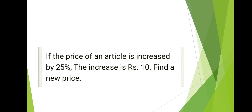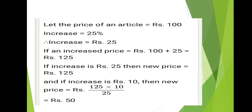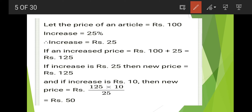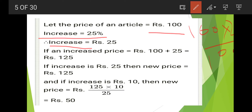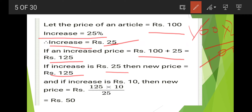The next question: if the price of an article is increased by 25% and the increase is rupees 10, find the new price. Let the price of an article be 100. Increase is 25% means increase will be 25. So increased price is 100 plus 25 equals rupees 125. If increase is rupees 25 then new price is 125, and if increase is rupees 10 then new price will be 125 into 10 by 25.